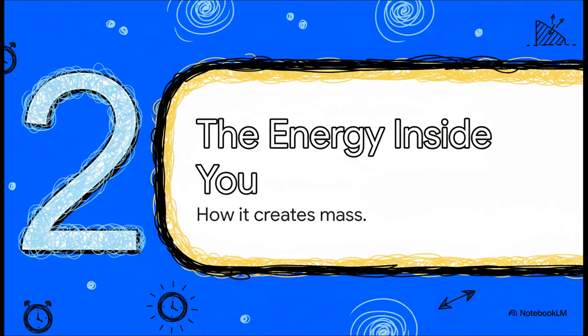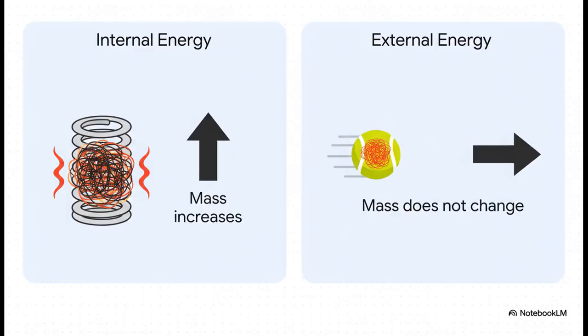So this is the crucial part we have to get right. It's all about the difference between the energy inside an object versus the energy of the object's motion through space. This distinction is everything. Think about it this way. If you squeeze a spring, you're packing potential energy inside of it. That spring genuinely becomes a tiny, tiny bit more massive. Or if you heat up your coffee, its molecules start buzzing around faster. You're adding energy to the system. And its mass increases.